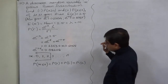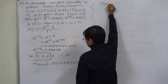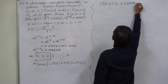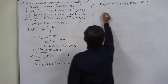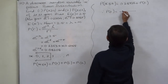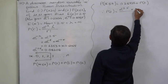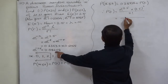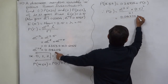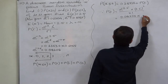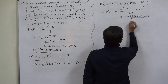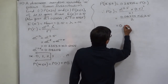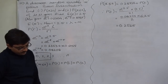We already know P(X = 0) + P(X = 1) = 0.28728. Now what is P(X = 2)? That will be e^(−2.5) × 2.5^2 / 2! = 0.08208 × 6.25 / 2, which simplifies to approximately 0.2565.